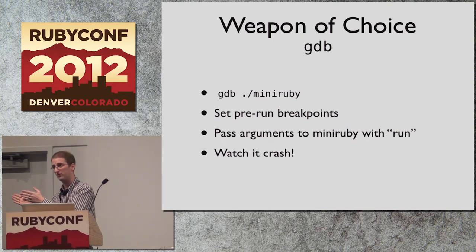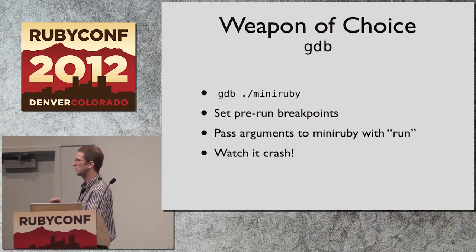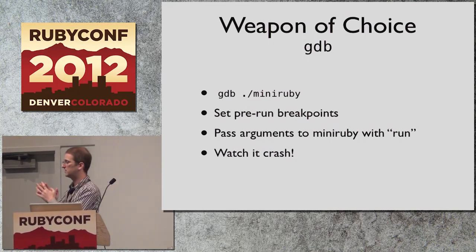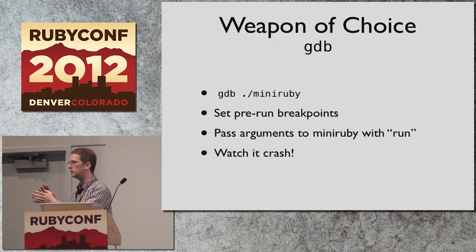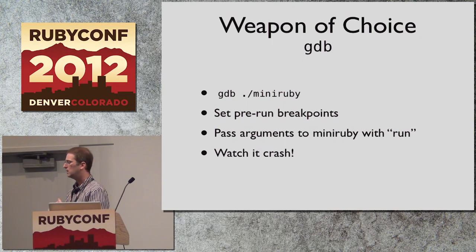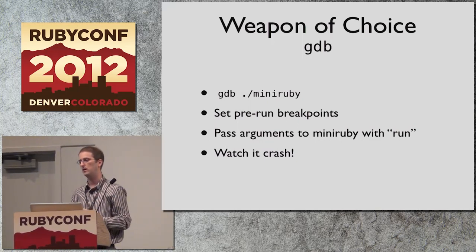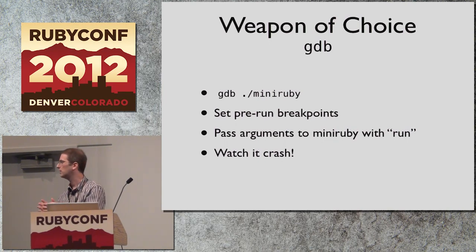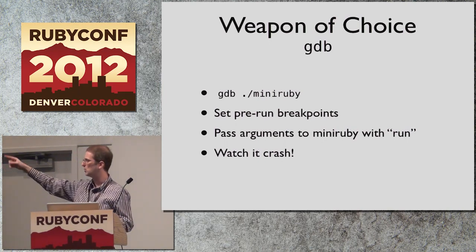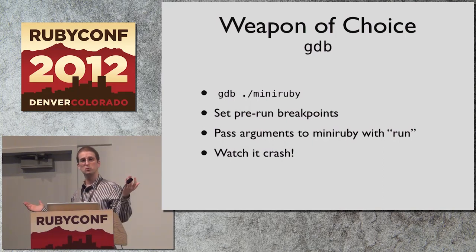The first weapon you need to get proficient with if you're going to debug anything in C-land is GDB. You simply give GDB the executable to run, which in this case is MiniRuby. GDB will start up, stop, and wait — that's so you can do any breakpoint setting before you begin running. The arguments you would normally pass to MiniRuby you instead pass as an argument to the run command in GDB. Because we had a crash, we wait for it to crash.